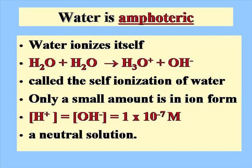Water is a substance that is amphoteric, meaning it can act as both an acid and a base. In fact, water will ionize itself — two water molecules interact where one acts as the acid and one acts as the base. One water molecule donates the proton forming the hydronium ion, leaving the hydroxide ion of the other. This is called the self-ionization of water. Only a small amount of water is in ion form, and H+ and OH− are equal in a neutral solution at 1×10⁻⁷ molar.